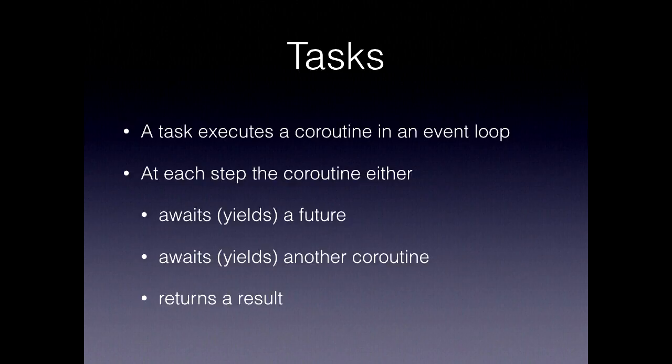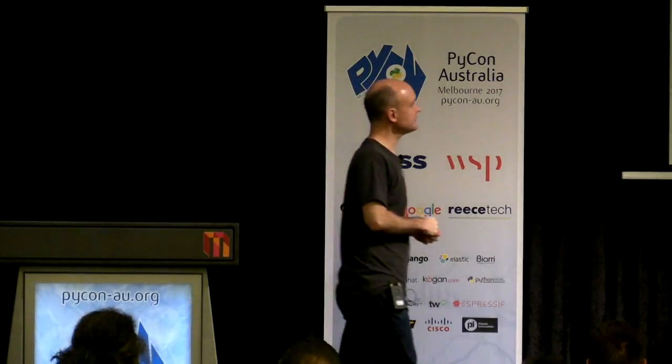The way that it does this is what's called a task in AsyncIO. A task is a data structure that runs a coroutine in the event loop, and at each step the coroutine basically does one of three things: it can await or yield a future — the task will put it aside until that future is ready, then continue; it can await or yield another coroutine — the task will run it and handle any waiting within it; or it can return a result, in which case the task knows the coroutine is finished.